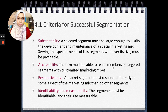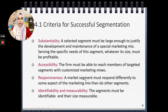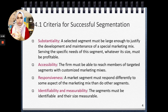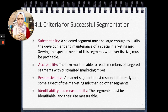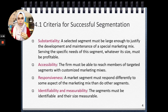The second criterion is accessibility — the firm must be able to reach members of the targeted segment with a customized marketing mix. Third is responsiveness — a market segment must respond differently to some aspect of the marketing mix than other segments do. For example, if you create Product A for Segment A and Product B for Segment B, the people in Segment A must be the ones buying Product A. You don't want Segment B also buying the same product meant for Segment A.